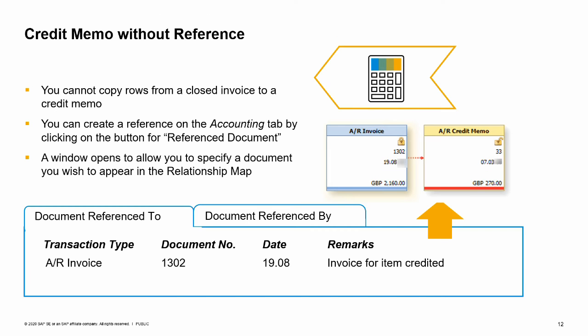Although you cannot copy rows from a closed invoice, you can connect your new credit memo to a closed invoice by using the reference document function. You can create a reference on the accounting tab by clicking on the button for reference document. A window opens to allow you to specify a document you wish to appear in the relationship map.